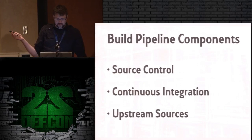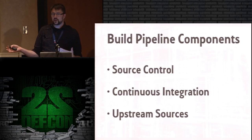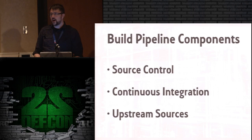When I talk about build pipelines, I'm talking about your source control — GitHub, GitLab, Bitbucket, wherever you're storing your code. Your continuous integration: running your tests on Jenkins, Travis, or your local box. Where are your tests running? As well as upstream sources: NPM, PyPI, Ruby gems, all of those.